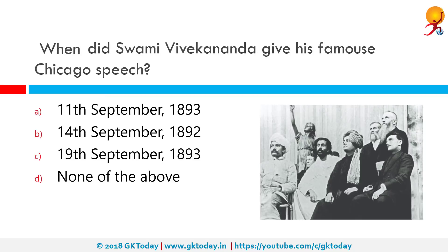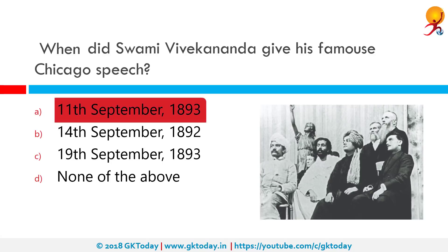When did Swami Vivekananda give his famous Chicago speech? In 1893 on September 11, Swami Vivekananda delivered his iconic speech at the Chicago Convention of the Parliament of Religions. During his speech, he introduced Hinduism to the world and talked about religion and tolerance. His speech received a two-minute standing ovation, which is why it is still remembered.